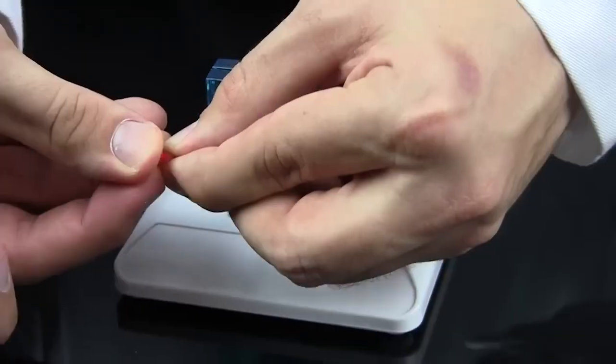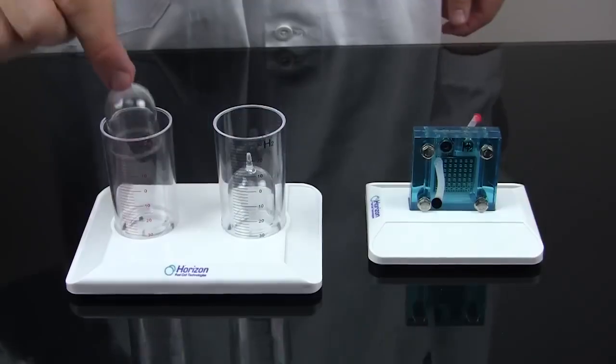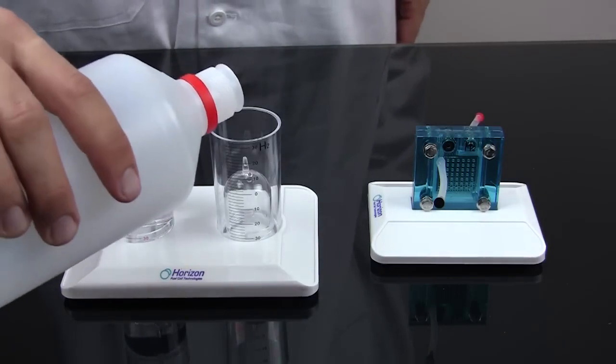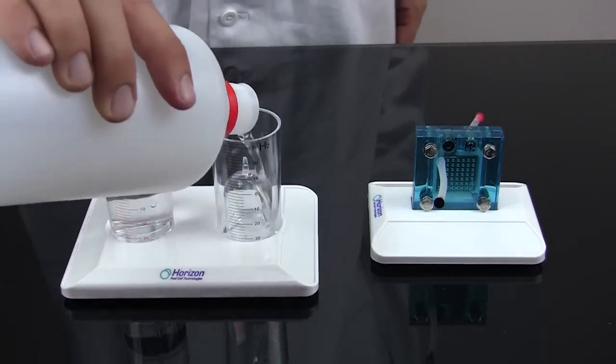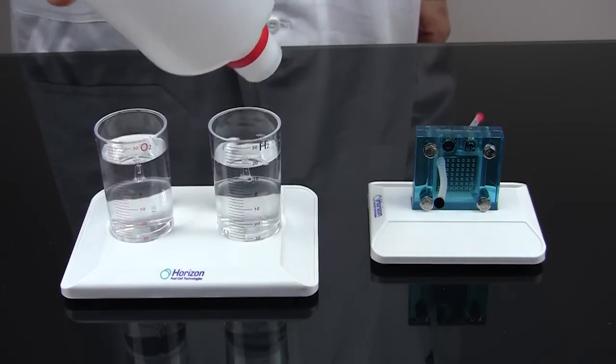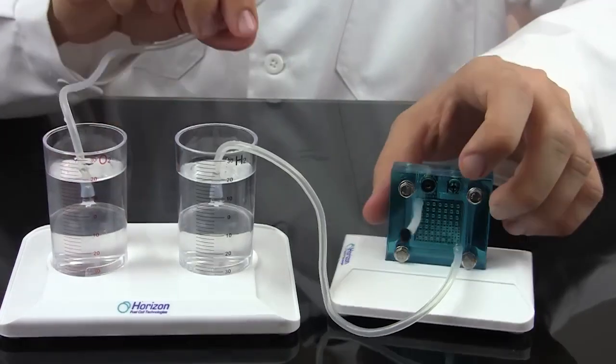Simply fill the oxygen side of the fuel cell with distilled water using the syringe. Then fill the oxygen and hydrogen cylinders with distilled water as well. Connect the fuel cell and cylinders with lengths of tubing, and connect the fuel cell to the battery pack.